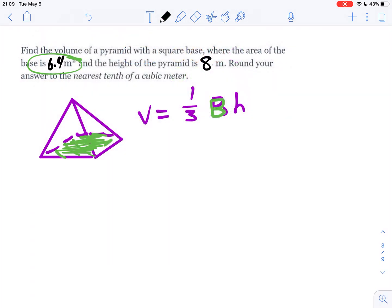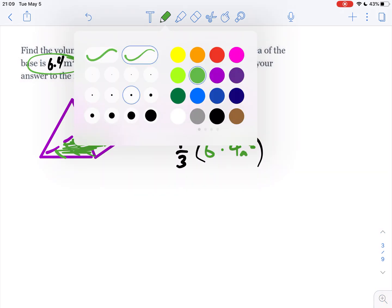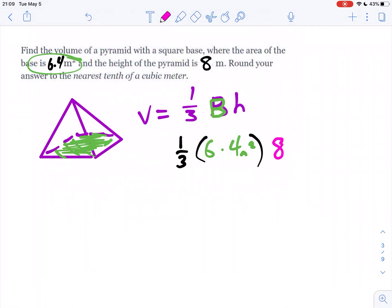So we have one-third times the base area. Well, the base area is 6.4, and the height, notice that's meters squared, and the height is 8 meters. So meters squared times meters gives us meters cubed. And let me draw the height in here. That's 8.